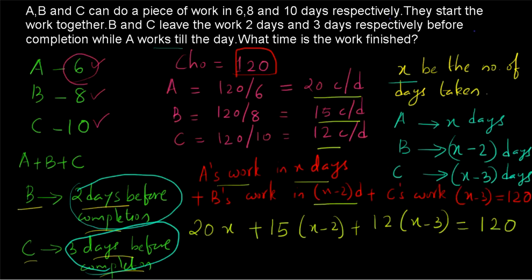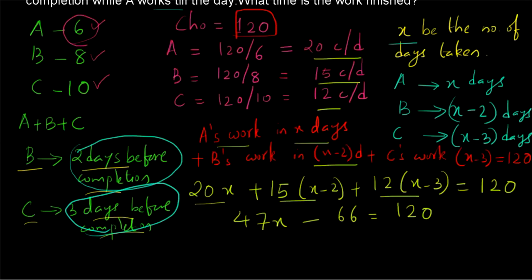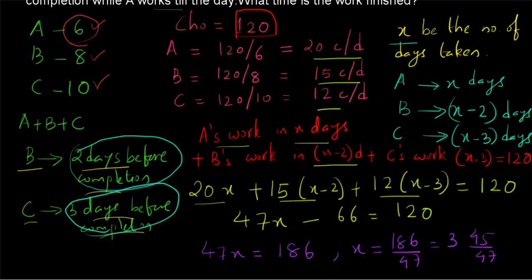By solving this formula we will be able to find out what X is. 20X plus 15X plus 12X gives us 47X. And 15 into 2 is 30, 12 into 3 is 36. So we will be getting 47X minus 66 is equal to 120. From that we will be getting 47X is equal to 120 plus 66, which is equal to 186. So we will be getting X is equal to 186 by 47, which is equal to 3 and 45 by 47 days. So our answer is 3 and 45 by 47 days will be taken for completion.